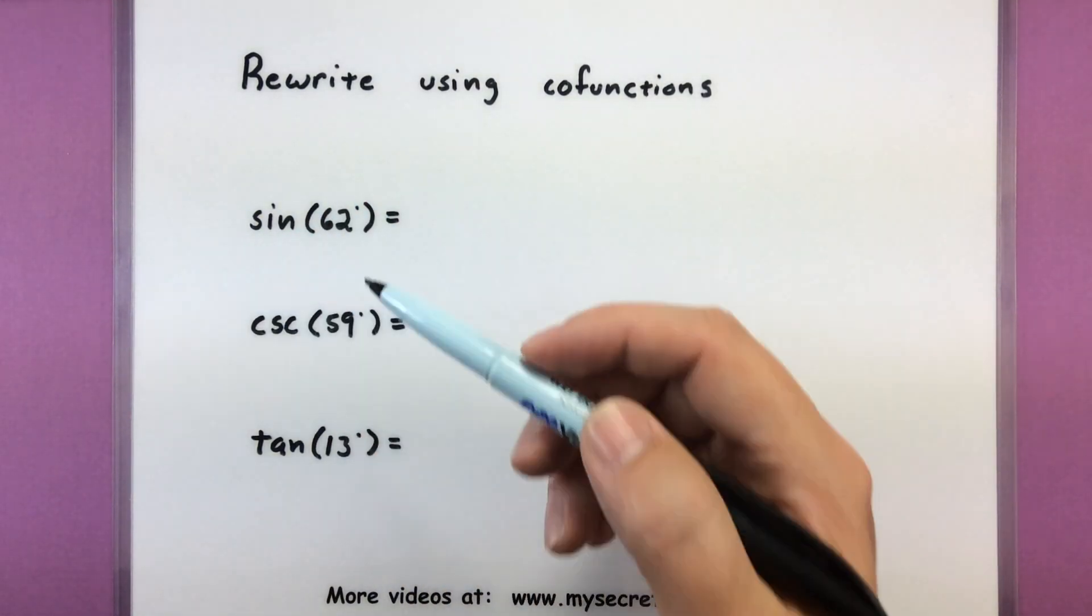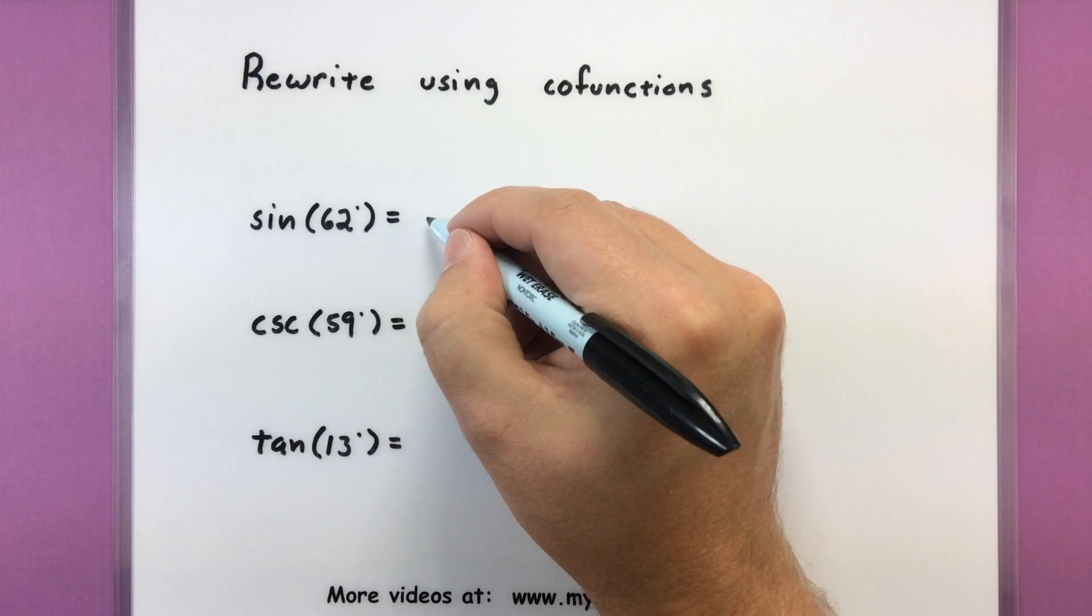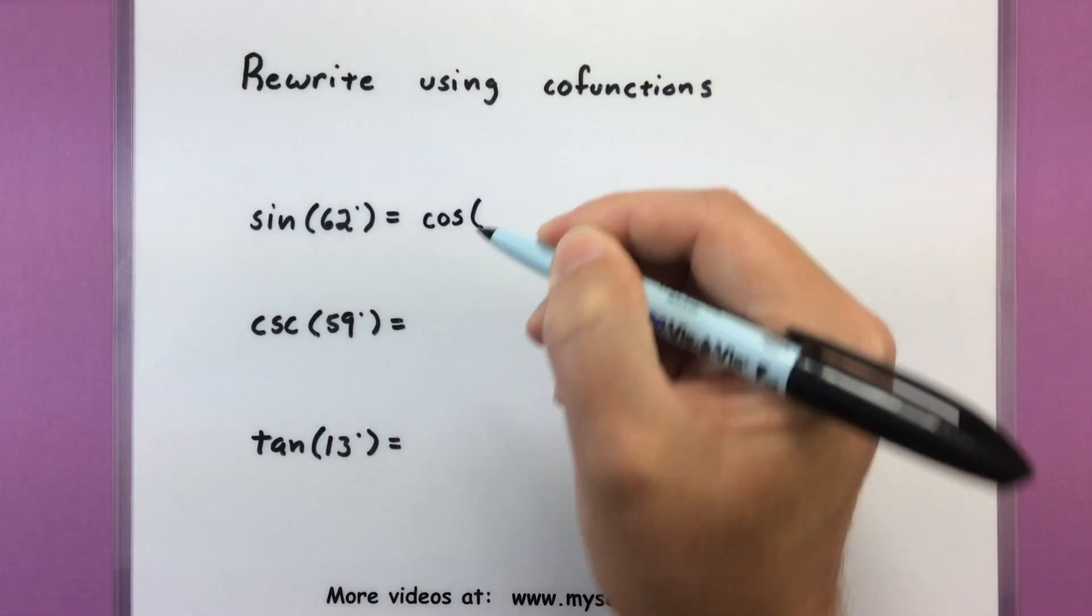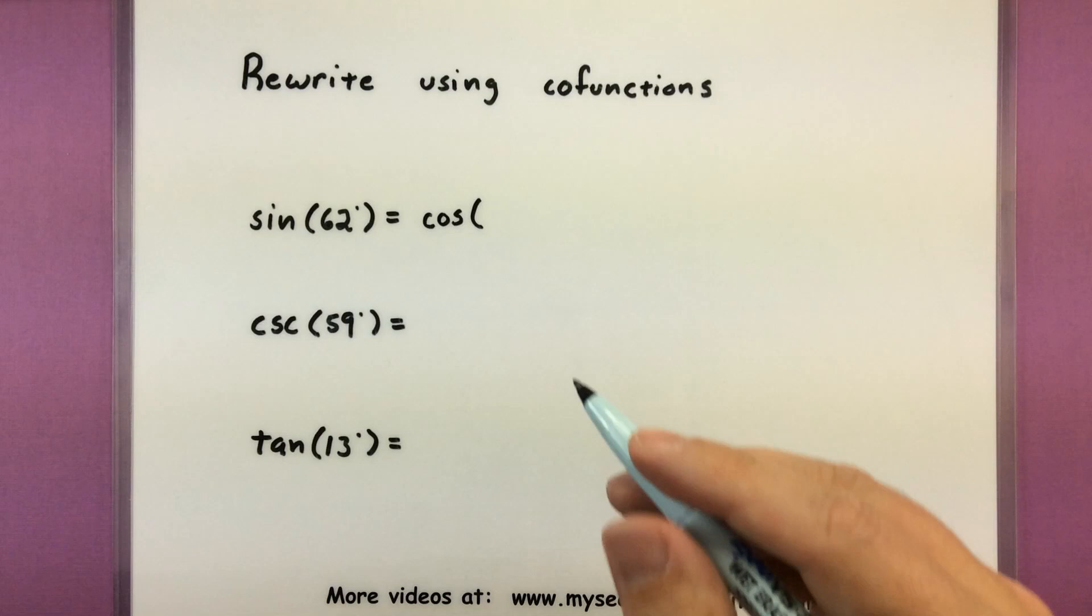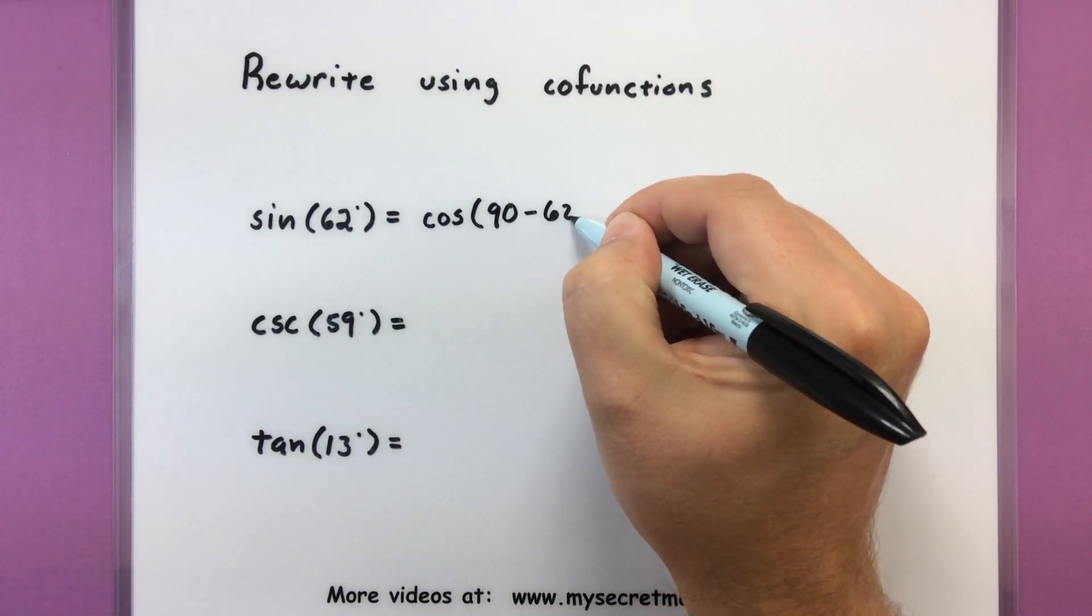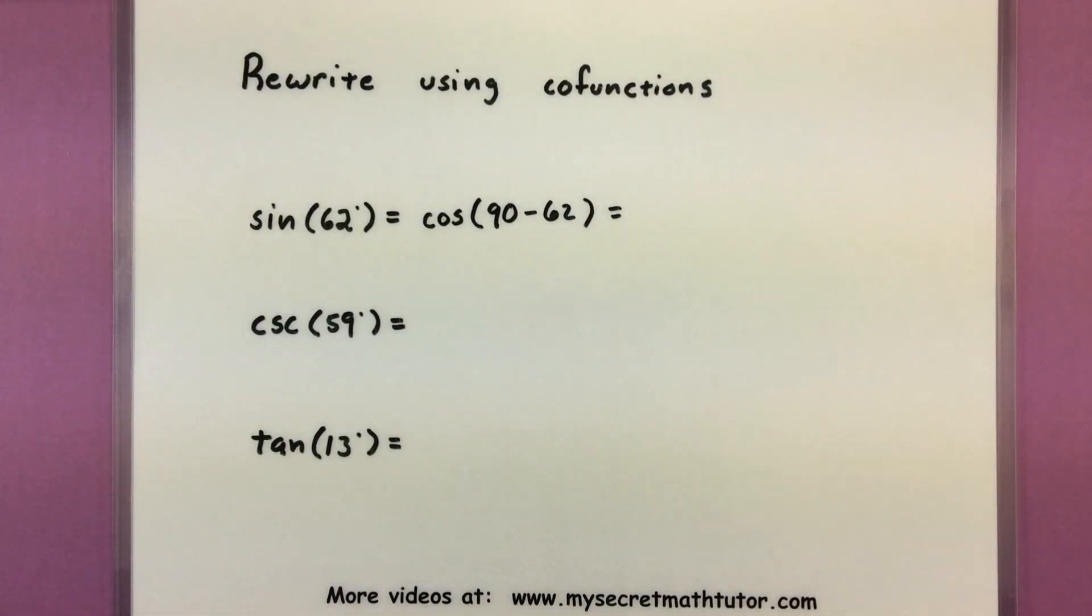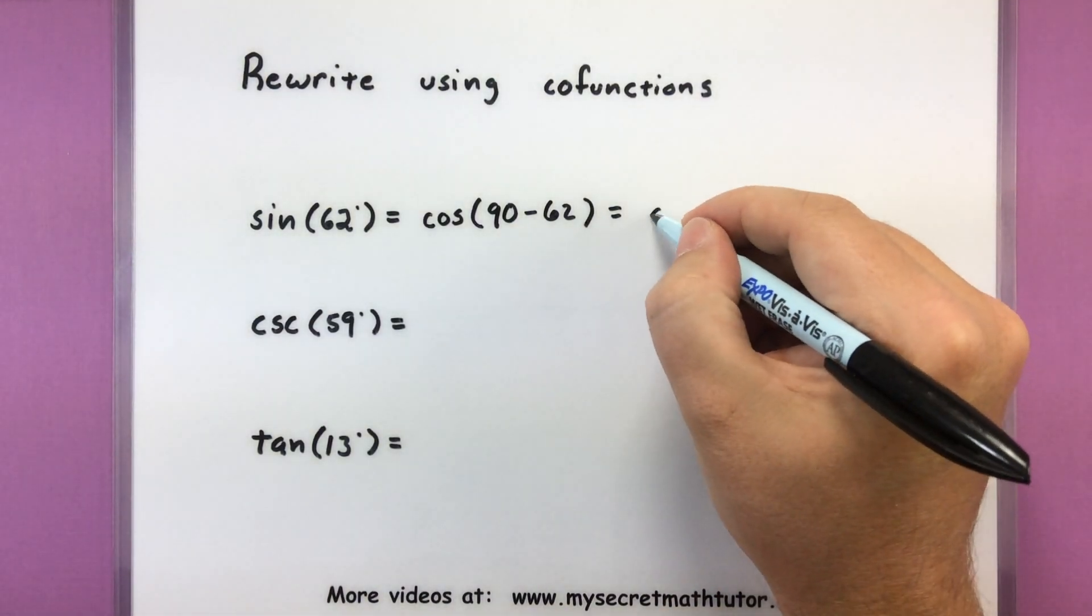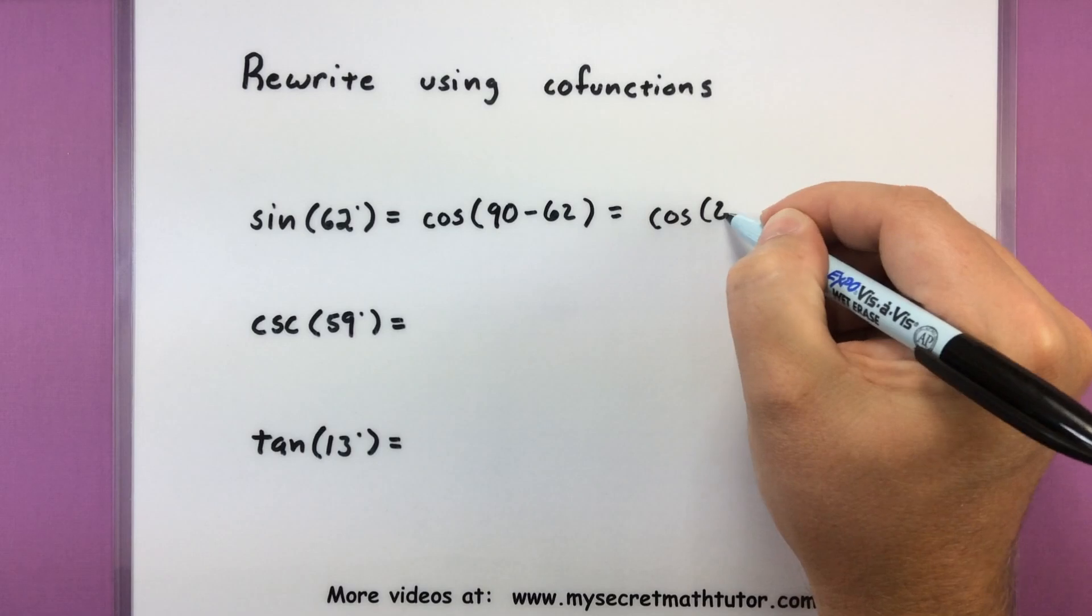So I want to rewrite sine of 62. Its cofunction is cosine. So I'll start off there. Now I need to make sure it's its complement. So I can take 90 minus 62. And that will give me the proper complementary angle. This will be cosine of 28 degrees.